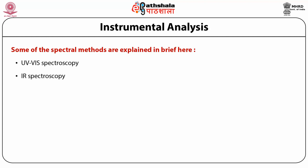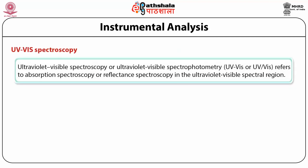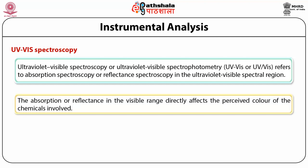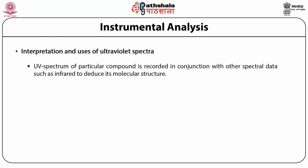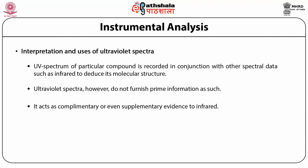UV-visible spectroscopy refers to absorption in the ultraviolet and visible region of electromagnetic radiation. Absorption in the visible region directly affects the perceived colour of the chemicals involved. Ultraviolet and visible radiation absorption promotes electronic transitions: sigma to sigma*, non-bonding to sigma*, non-bonding to pi*, and pi to pi*. The UV-visible spectrum of a particular compound is recorded in conjunction with other spectral data such as infrared to help elucidate its molecular structure. Ultraviolet spectra do not furnish primary information on their own, but act as complementary or supplementary evidence to infrared.